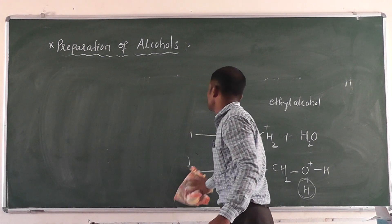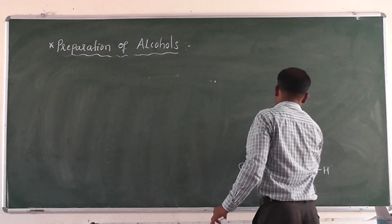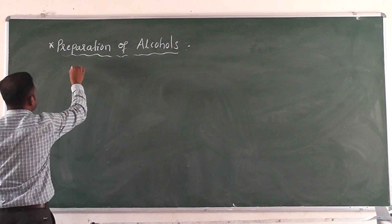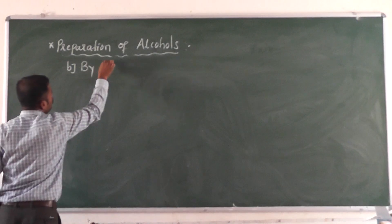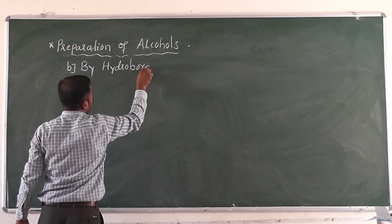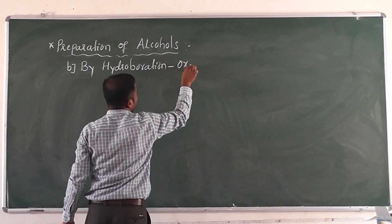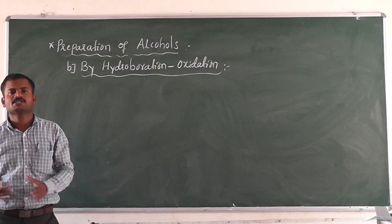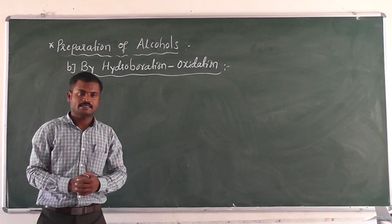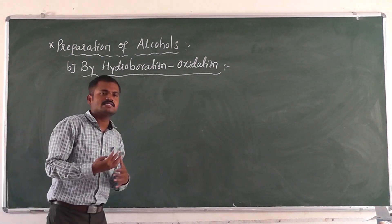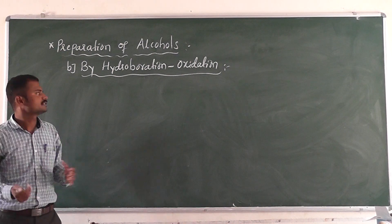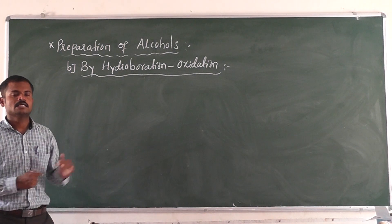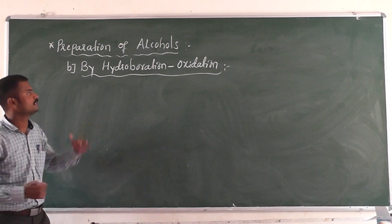From alkenes we can also prepare alcohol by the hydroboration oxidation method. This is the second method of preparation from alkenes: hydroboration oxidation. Hydroboration means addition of borane (BH₃). Oxidation means addition of oxygen — here we add hydrogen peroxide H₂O₂. So this is called the hydroboration oxidation method.